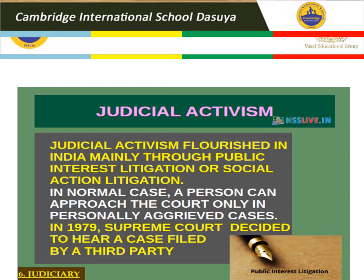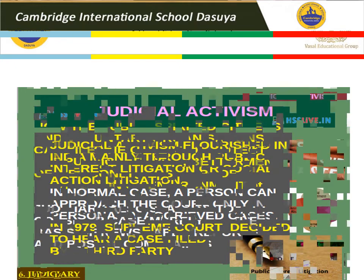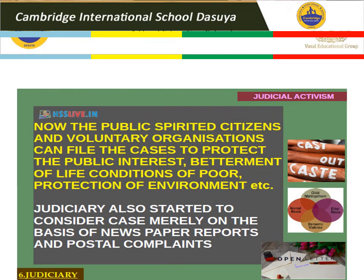Around the same time, the Supreme Court also took up a case about the rights of prisoners. This opened the gate for a large number of cases where public-spirited citizens and voluntary organizations could file cases to protect the public interest, improve living conditions, and protect the environment. The judiciary also started considering cases not only based on newspapers, reports, and postal complaints, but also on other means, as courts and individuals as part of society must have the right to seek justice wherever rights are violated.